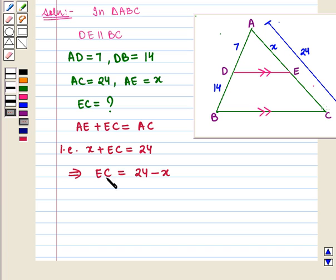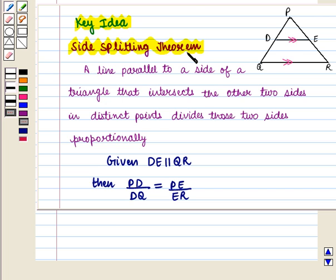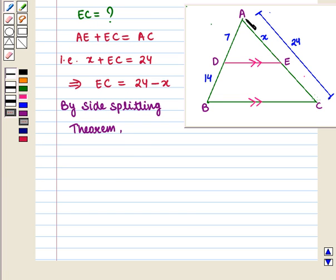Now using the side splitting theorem, in triangle ABC we have DE parallel to BC, so AD/DB should equal AE/EC.